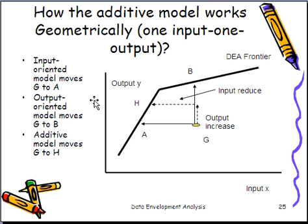And now, if you have one input, one output. Let's look at this. You have A, B, that's the frontier. So this is an actual variable return to scale frontier. And if you look at this G, if you have input-oriented model, you basically reduce the input all the way to A on the frontier.